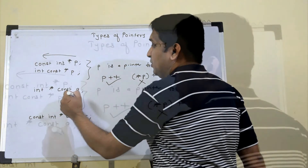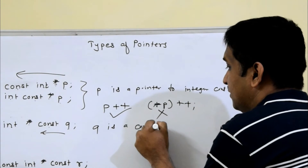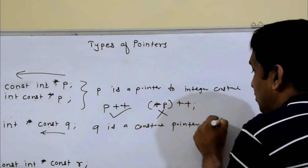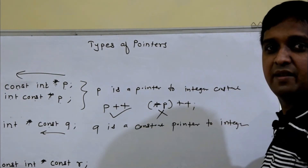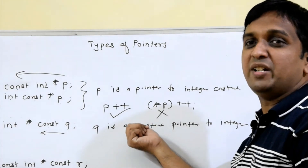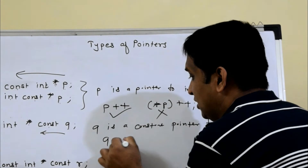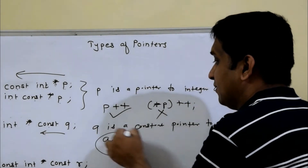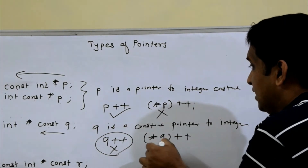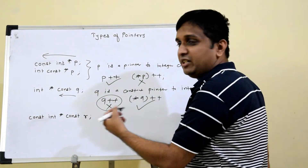The second declaration: q is a constant pointer to integer. Reading from right to left, q is a constant pointer to integer. That means q itself is constant, but the variable to which it is pointing is not constant. So if I say q plus plus, this will throw an error. But if I say asterisk q plus plus, then this is possible.